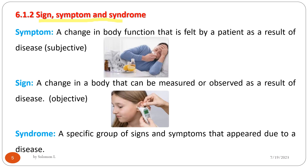Sign, symptom, and syndrome are illness conditions. A symptom is a change in body function that is felt by the patient as a result of disease — it is subjective. A sign is a change in body function that can be measured or observed — it is objective, detected by machines or devices. A syndrome is a specific group of signs and symptoms that appear due to a particular disease.